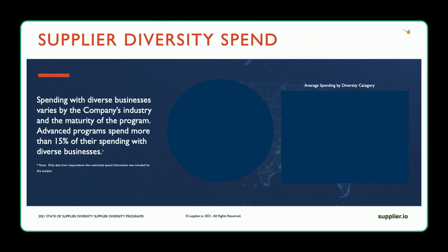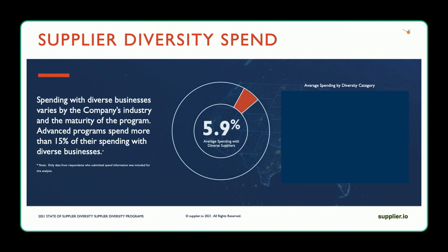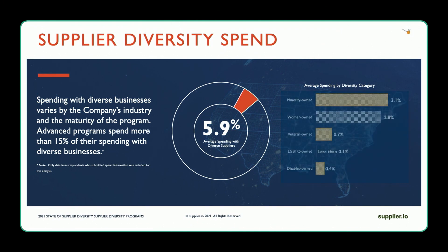In terms of nationwide — the percentage of spend across the entire country, not just California or New York — it's a measly 5.9%. How is that for a metric? Could we be doing better? Absolutely. And when you break that 5.9% down, it's even worse. 50 years — why haven't we done something about this? Everybody knows it's important. Everybody wants to do it. But these are our results after 50-something years.